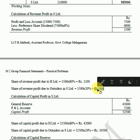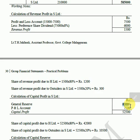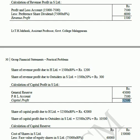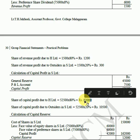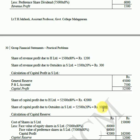The capital profit consists of the general reserve amount of Rs.45,000 plus the profit and loss account balance of Rs.7,500 on 1st January 2014, giving a total capital profit of Rs.52,500. This is proportionally divided: 80% to the holding company and 20% to outside shareholders, which gives Rs.10,500 to outsiders.